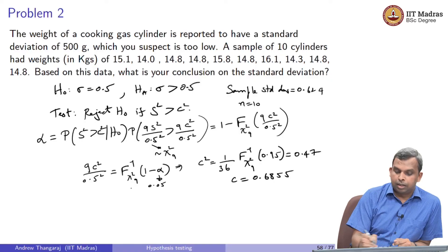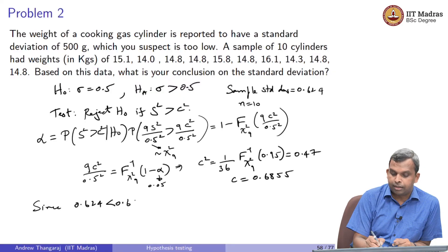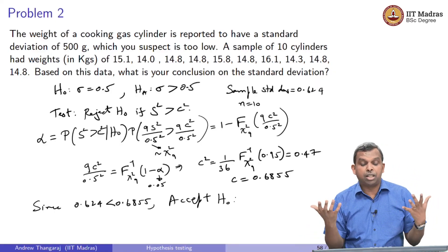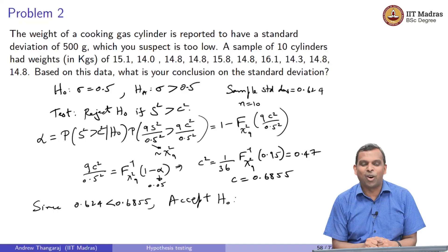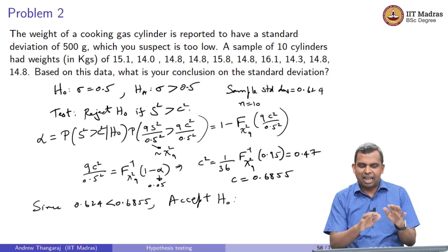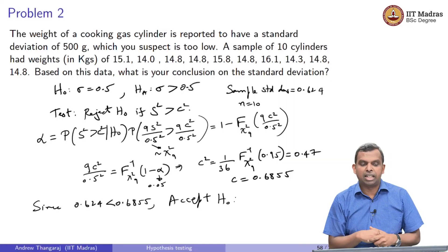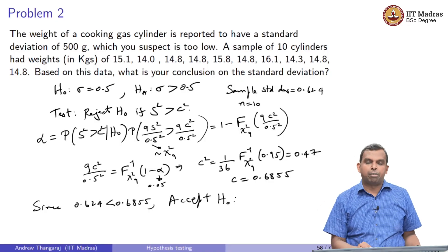Since the sample standard deviation 0.624 is less than c = 0.6855, we end up accepting the null hypothesis. In spite of the suspicion that the standard deviation might be greater than 0.5 kg, the gas cylinders are within the expected quality range. The same test structure applies — look at the data, compute its standard deviation, and come to a conclusion. That is the end of the one-sample tests. In the next lecture, we will do two problems on two-sample tests.